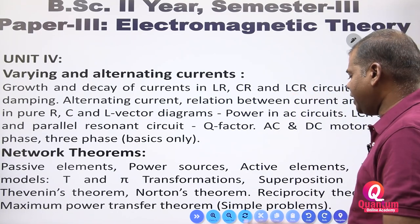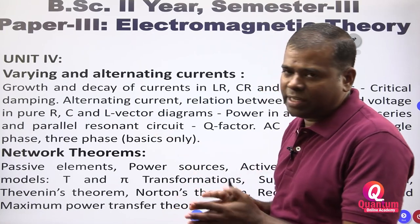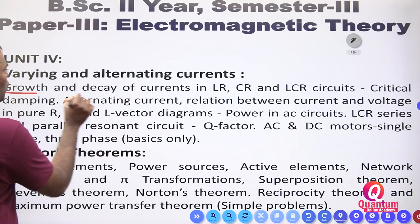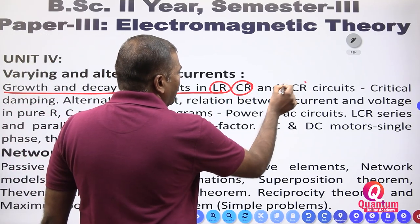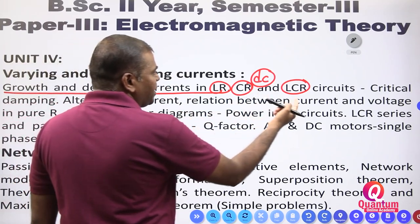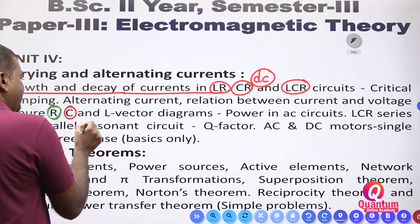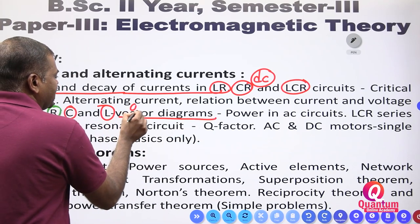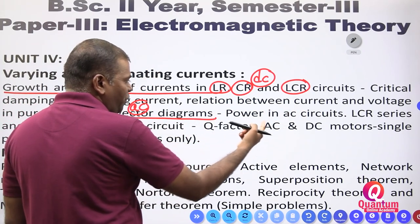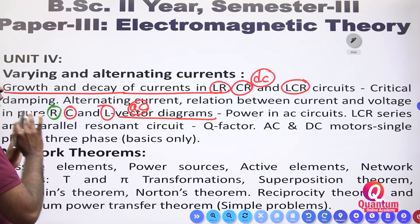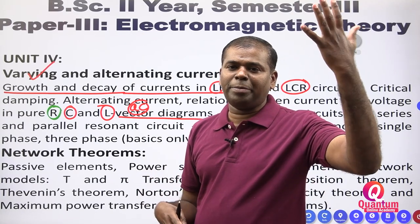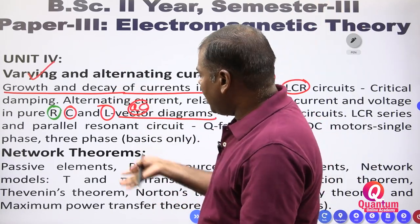The fourth unit is varying DC — wearing and alternating current and network theorems, two parts. In varying and alternating current: purely differential equation form, growth and decay currents in LR circuit, CR circuit, LCR circuit, using DC with critical damping, alternating current, relation between current and voltage in pure resistance, conductance, inductor, vector diagrams. Power in AC circuits, LCR series and parallel resonance circuits, Q-factor, AC motors and DC motors, single-phase and three-phase — basic ideas only. Network theorems follow.